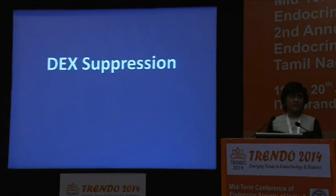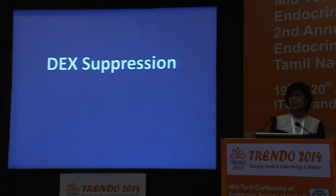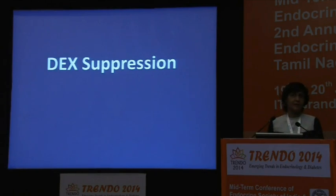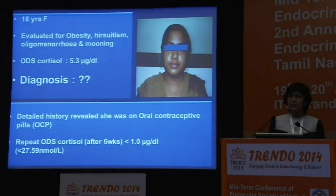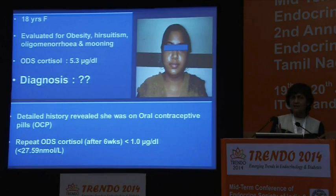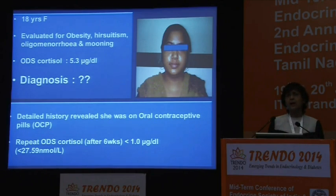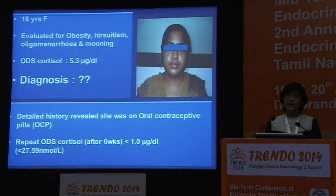The dexamethasone suppression test is an extraordinarily common test we use — whether you call it overnight or low dose — with very good logistics, especially the overnight test on an outpatient basis. But consider this scenario: a girl with polycystic ovarian syndrome presents with an abnormal overnight dexamethasone suppression value. Does she really have Cushing? The answer is no — much like a previous case, she was on the oral contraceptive pill. Addressing underlying drugs the patient is taking is of paramount importance when doing any dexamethasone suppression test.